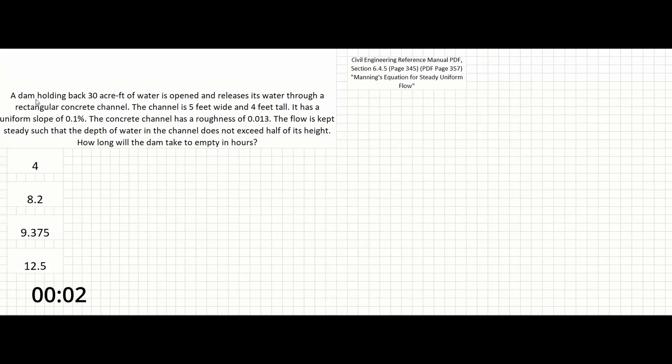Okay guys, in this problem, a dam holding back 30 acre-feet of water is opened and releases its water through a rectangular concrete channel. The channel is 5 feet wide and 4 feet tall. It has a uniform slope of 0.1%. The concrete channel has a roughness of 0.013. The flow is kept steady such that the depth of water in the channel does not exceed half of its height.